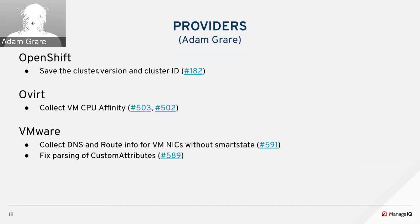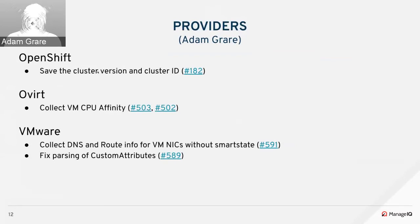On oVirt, Dan added a couple of PRs to collect VM CPU affinity — a property that lets you specify which specific host CPUs your oVirt VM's CPUs run on. This is an extension beyond what VMware had; on oVirt you can pick one-to-one mappings. The format was updated slightly but it's still a compatible comma-separated list, so you'll be able to see it in the UI.